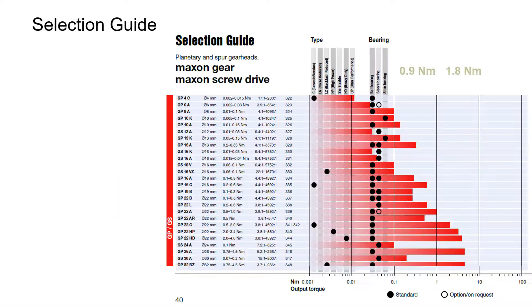The selection guide in a catalogue offers a good overview of the rated torque of Maxon gearheads. The red bars indicate the torque capabilities with respect to the scale at the bottom. The smaller gearheads at the top of the list are too weak — the continuous torque rating is too small. In the lower part, one finds the larger and stronger gears with sufficient continuous torque, starting from diameter 22.